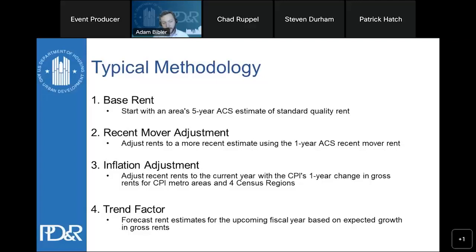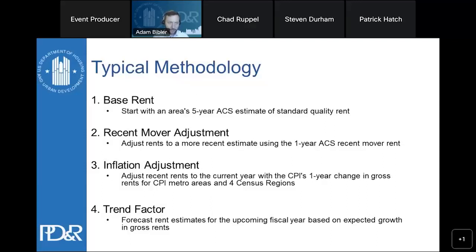Because there is a time lag between the ACS year and the present, we apply inflation adjustments. That adjustment has historically been based on the Bureau of Labor Statistics Consumer Price Index for gross rents — the combination of rent of primary residence and fuels and utilities. The BLS surveys a fixed universe of rental units in consecutive periods to produce a year-to-year price change, rather than a dollar amount, which gives us a growth factor applied to ACS estimates.